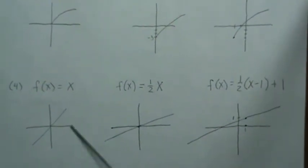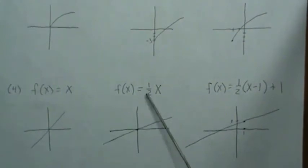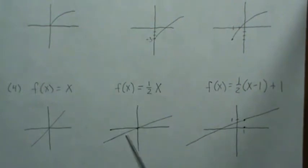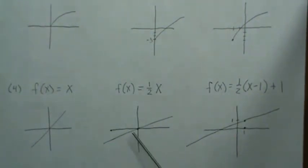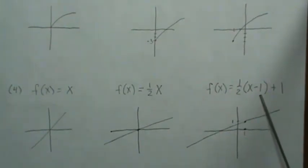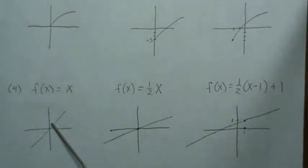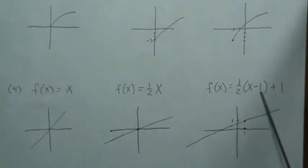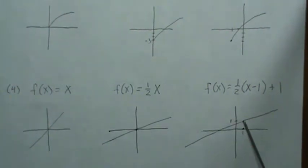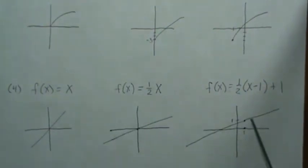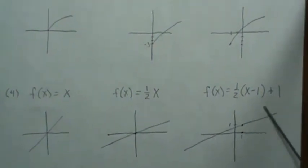For a line, which is our parent function, one half means it shrinks it down to the x-axis so it has a smaller slope. For a right shift and up shift, you take that point, move it up and over. The one half is a shrink so it has the same slope as before where the original would have gone through that point.